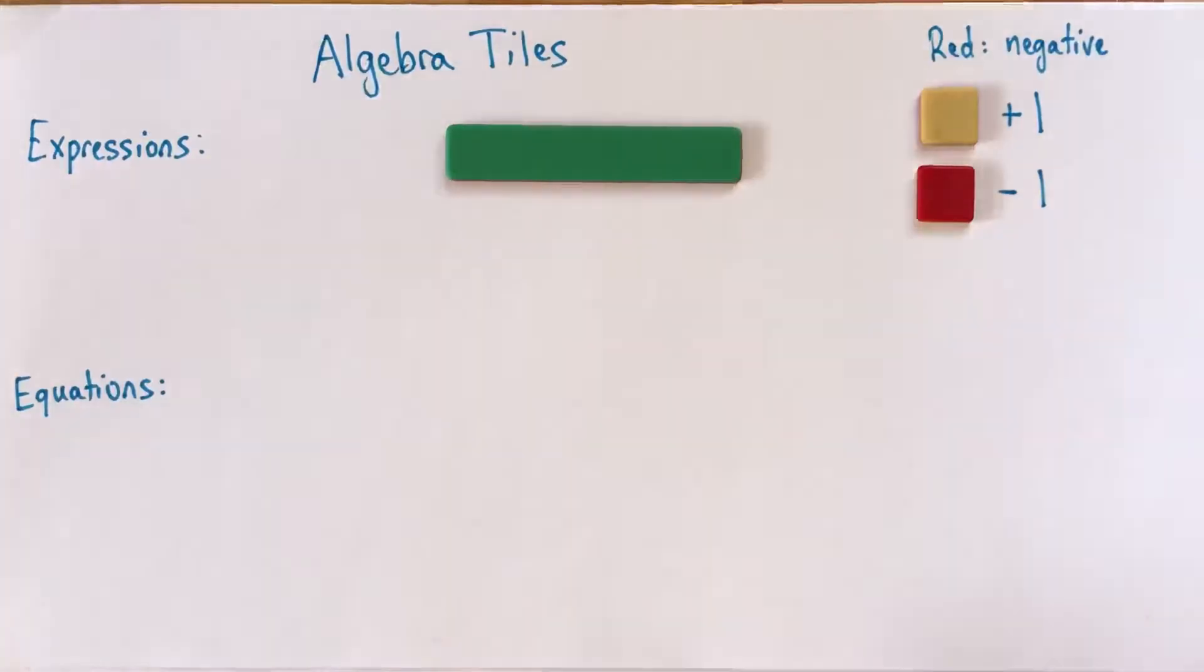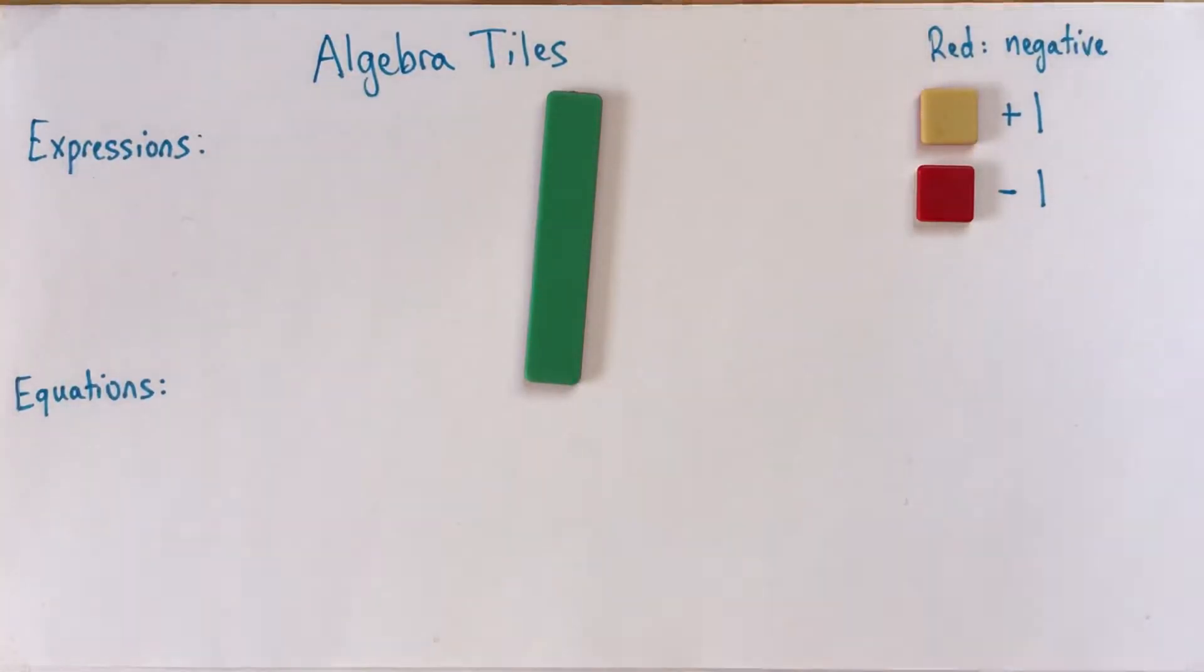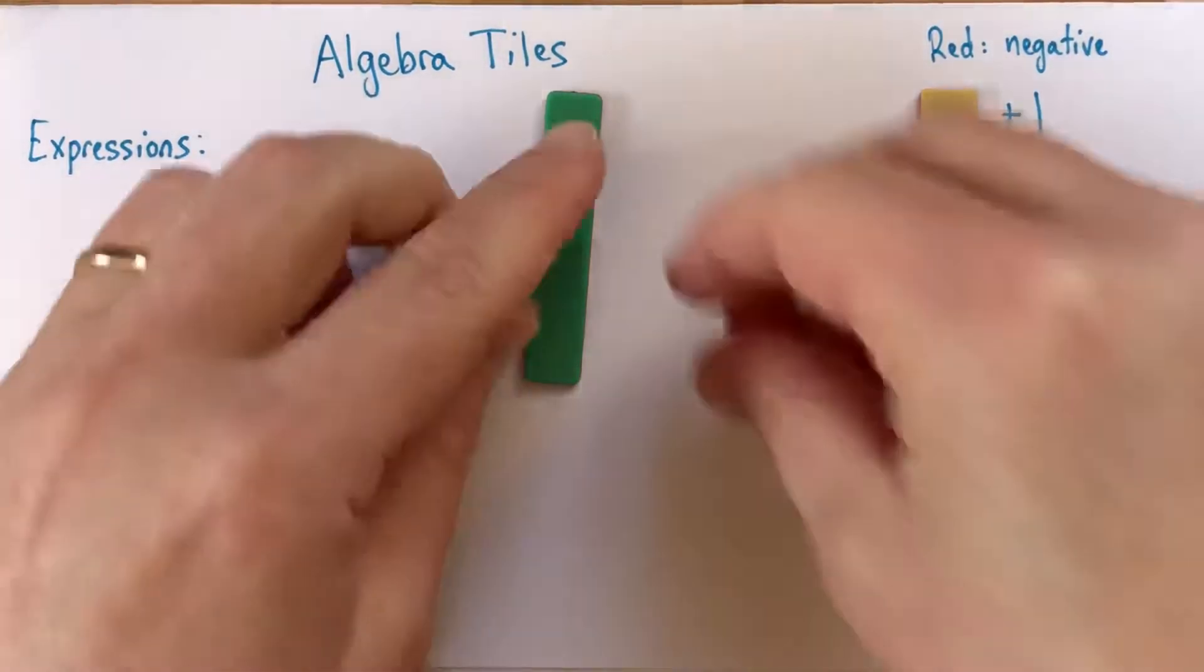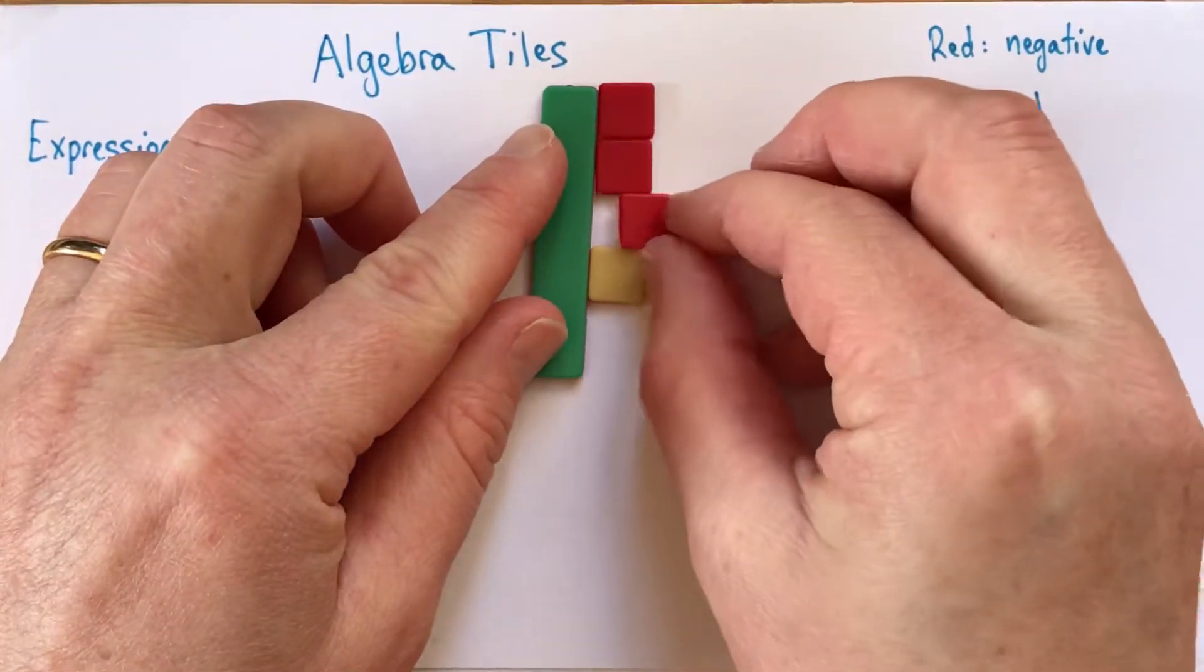And then we've got this piece. You may have already seen this with two-color counters, but you might be like, well, what's the deal with this? One interesting thing to notice is that usually with the algebra tiles, this might depend on the company, where yours came from, or whether they're homemade.